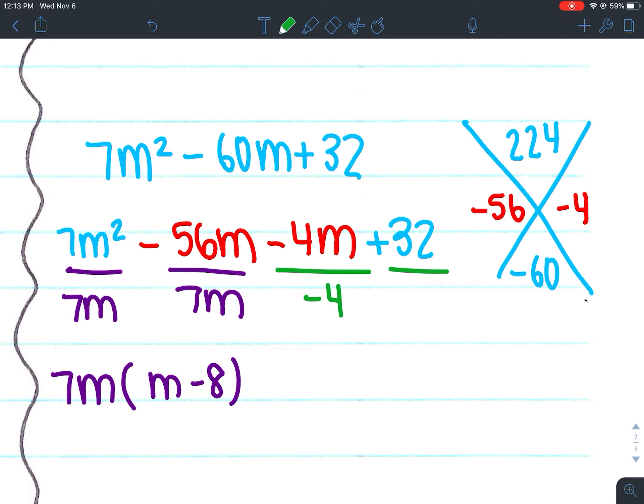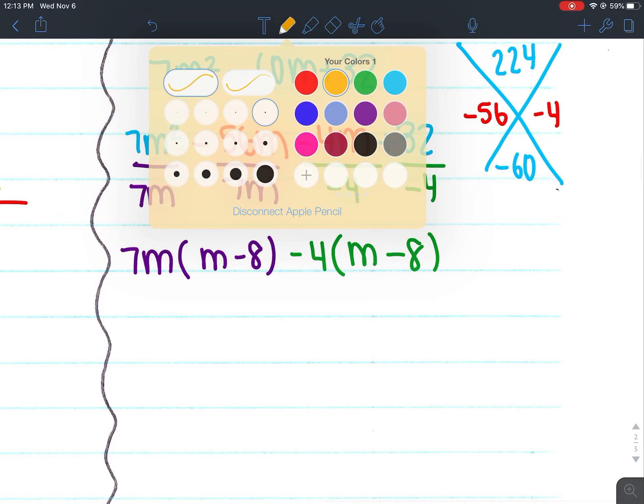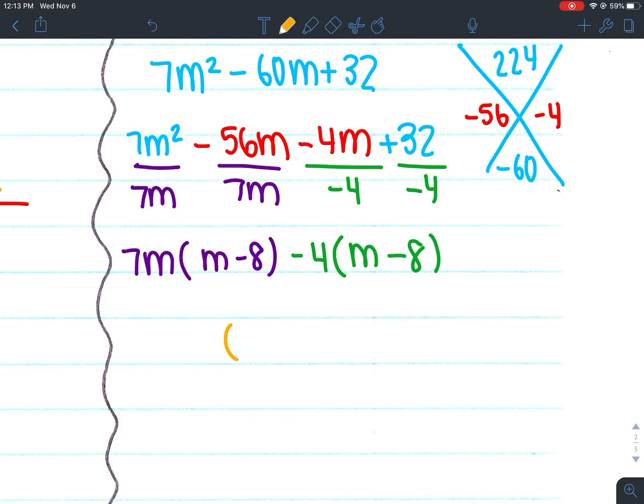My GCF for the next two would be -4 because my first term in the group is negative. So I'd take out a negative number and then m - 8. So then you would check to make sure your parentheses match each other. And they do. So one of our factors is 7m - 4 and the other factor is m - 8.